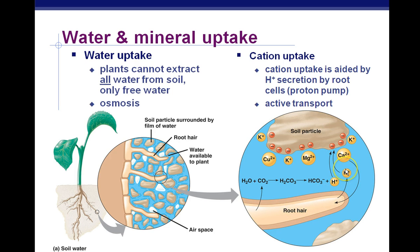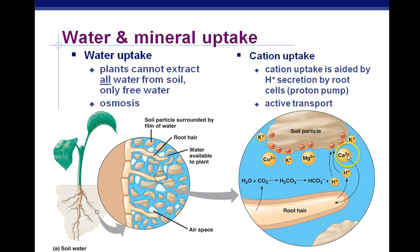Without the hydrogen ions being released by the plants, the cations are stuck to the soil particles. Step one: hydrogen ions are pumped out of root hairs via active transport. Step two: hydrogen ions bind to negatively charged soil particles, freeing up positively charged calcium and other ions that plants need. Then the calcium and other ions can move into the root hairs.